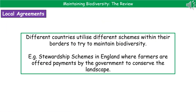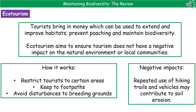In terms of what happens locally, different countries will utilize different schemes within their borders to try to maintain biodiversity. In England, there are farmers who are offered payments by the government to conserve their landscapes. Another key area we need to be aware of is ecotourism. Tourists do bring in money to countries, which can be used to extend and improve habitats, to employ people to prevent poaching and maintain biodiversity.